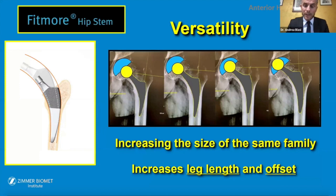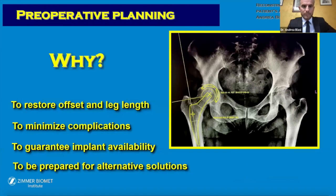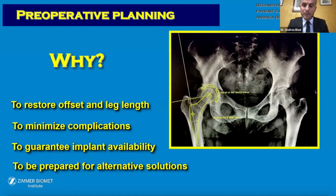Thanks to these characteristics, the Fit More stem has great versatility. In fact, by increasing the size within the same family, we can increase both length and offset. Preoperative planning is very important — it is essential to restore offset and leg length, to minimize complications, to guarantee implant availability, and to be prepared for alternative solutions.